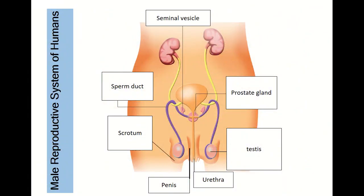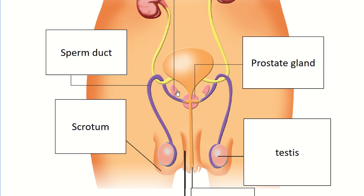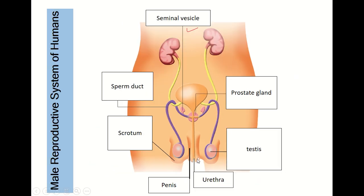Now let me continue to discuss the male reproductive system of humans. As you can see, there are several parts: the seminal vesicles, the prostate gland, the sperm duct, the two testes and the scrotum, and the penis and urethra.